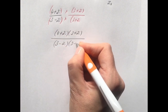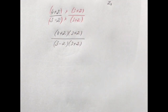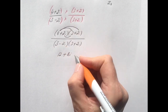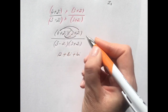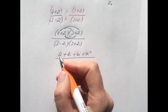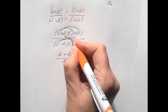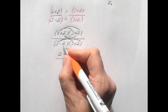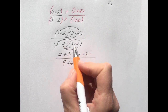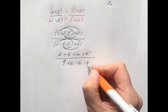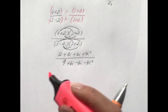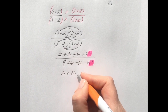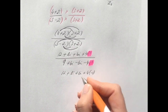Multiplying out the double brackets: on the top, 4 times 3 is 12, 4 times 2i is 8i, 2i times 3 is 6i, and 2i times 2i is 4i squared. On the bottom, 3 times 3 is 9, 3 times 2i is 6i, minus 2i times 3 is minus 6i, and minus 2i times plus 2i gives minus 4i squared. We have i squared on both top and bottom.